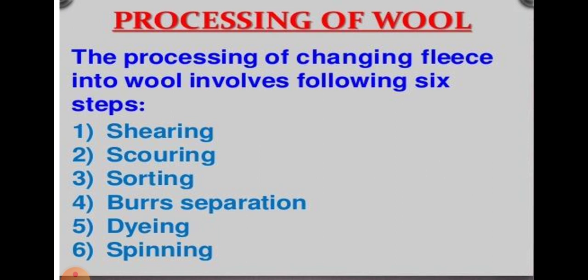The process of obtaining wool from sheep involves the following steps: shearing, scouring, sorting, combining, dyeing, and spinning. These are the six steps for obtaining wool. Instead of 'burr separation,' we use the simple word 'combining' for the fourth step.